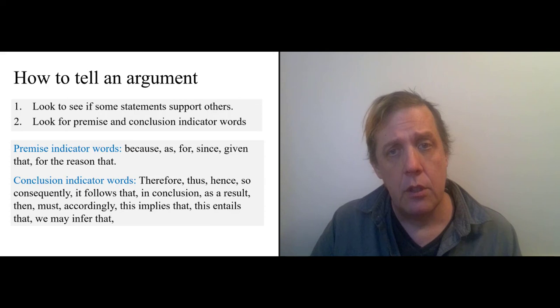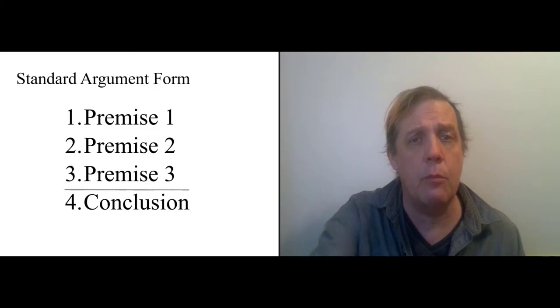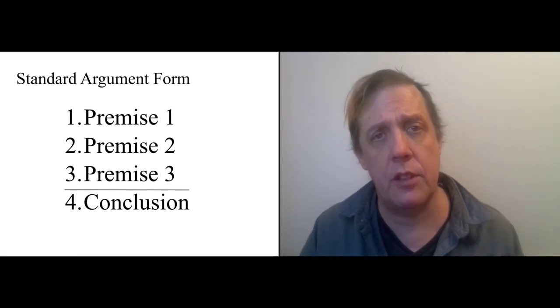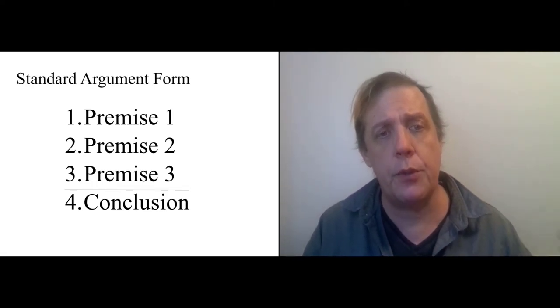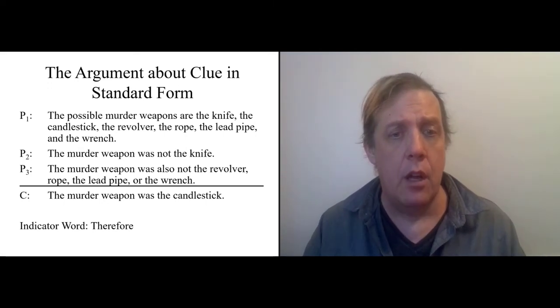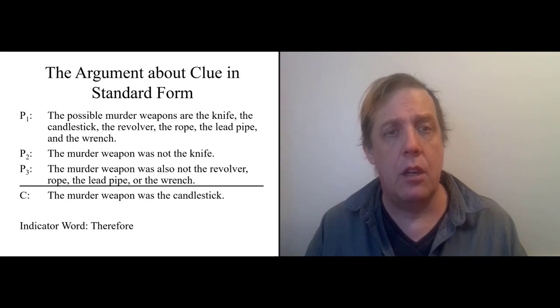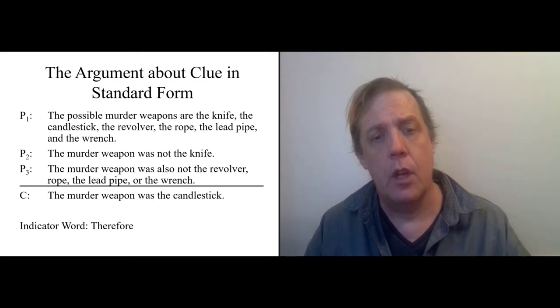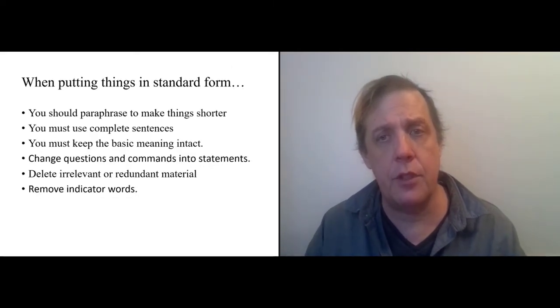For the test, you are going to have to identify arguments and put them in what we call standard form, which looks like this. You list the premises. I've already been showing you some arguments in this form. You list the premises: one, two, three. Then you draw a line and you write the conclusion. So our argument about Clue could be represented this way, right? The possible murder weapons are, and then the murder weapon is not this. The murder weapon is not that. Those are three premises that leads you to the conclusion: the murder weapon was the candlestick.